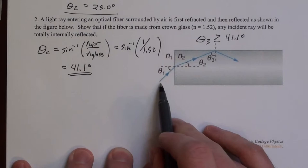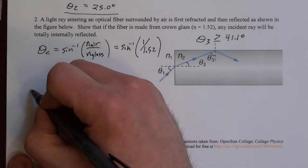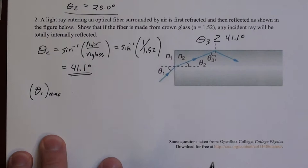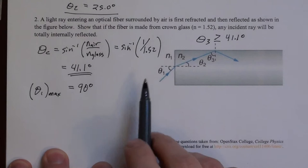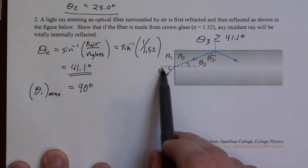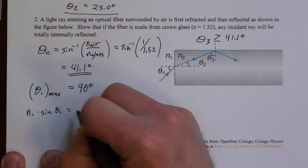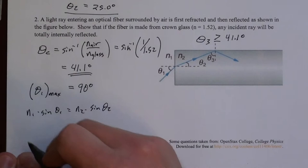So what's the biggest theta 1 could be? Well, 90 degrees, or maybe just a little smaller than 90 degrees. But 90 degrees is right at that threshold. So theta 1 max is 90 degrees. So I like to calculate what does that do to theta 2? Because a bigger theta 1 is a bigger theta 2. So what's theta 2 max? Well, I just need to use Snell's Law at this interface.